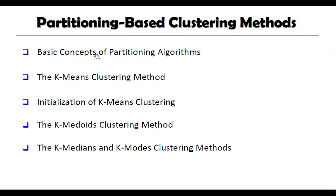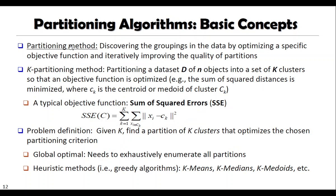In partitioning, we will see the basic concept behind partitioning algorithms, and we will look at one algorithm — the K-means clustering algorithm. The partitioning method discovers groupings in the data by optimizing a specific objective function and iteratively improving the quality of partition. There is a method called the K-partitioning method. Its objective is: partitioning a dataset D of N objects into a set of K clusters so that an objective function is optimized.